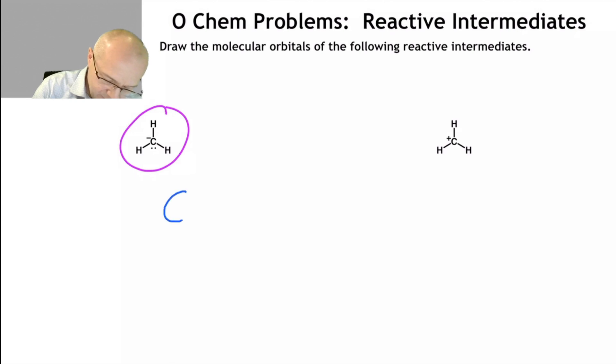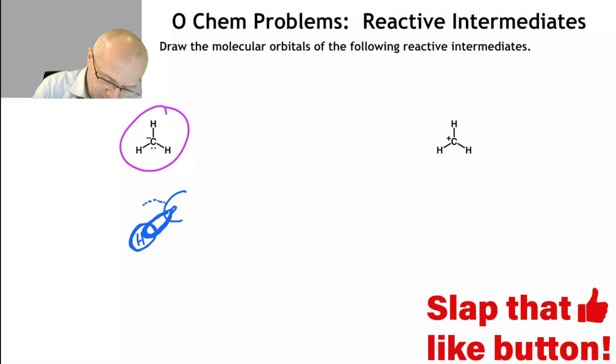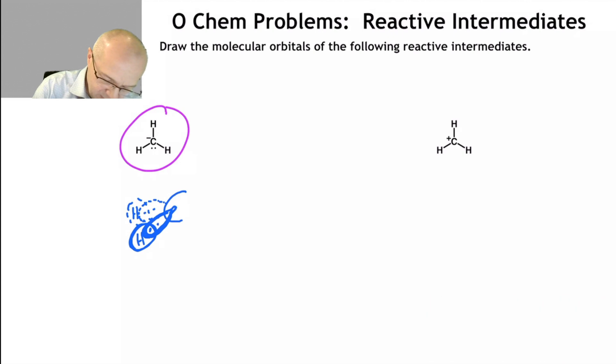So now carbon. Here's the sp3 orbital coming out towards us, and there's the hydrogen. Here's the sp3 orbital going away from us with its hydrogen. If you want, you can draw the electrons in like that. Here is the sp3 orbital going up - let's put the lone pair in there.